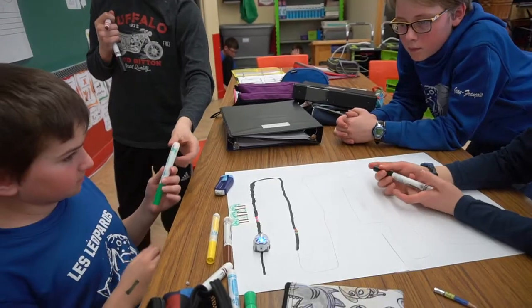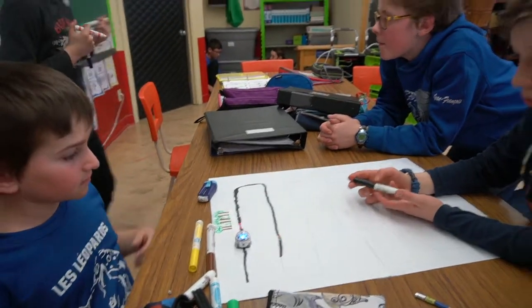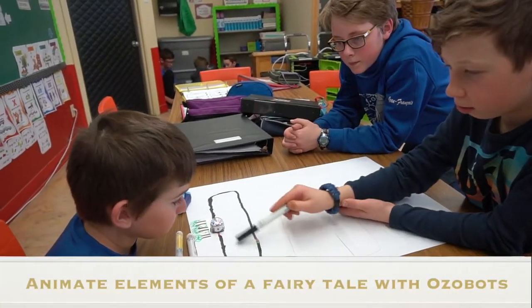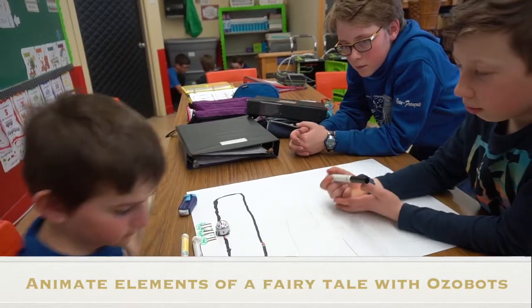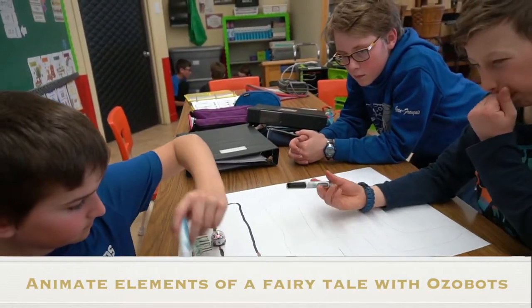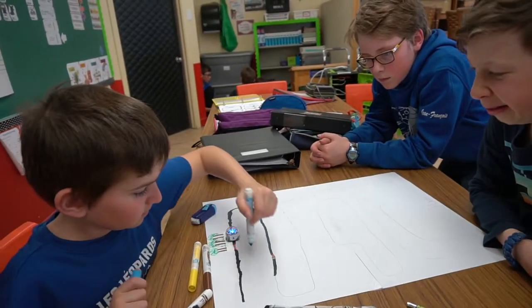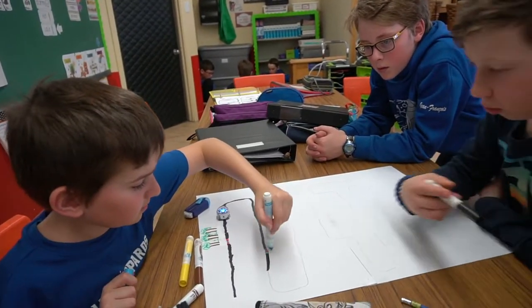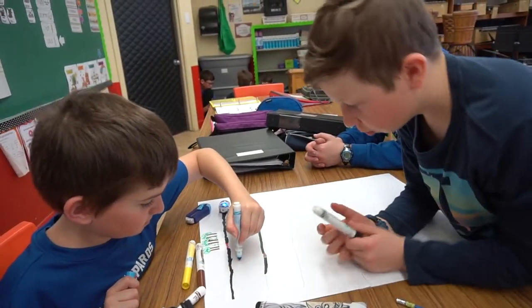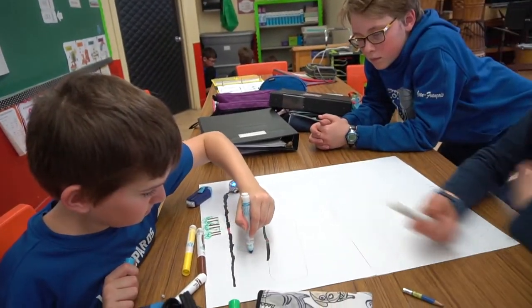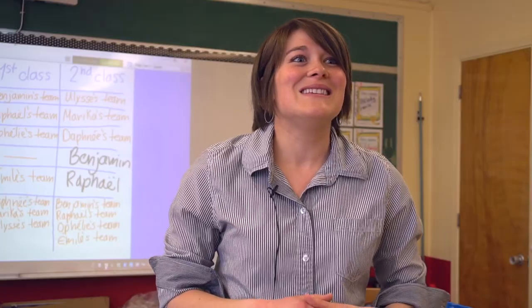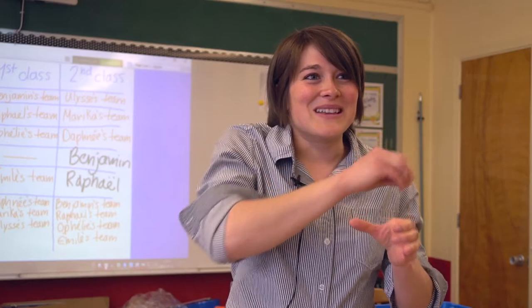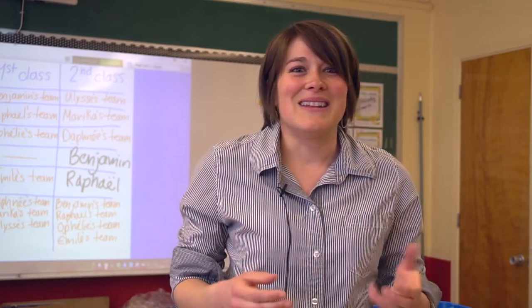They had already read the story of Little Red Riding Hood and they were trying to make their Ozobot move so it really illustrates the story. It proves that they really understood the details of all the elements of the story.